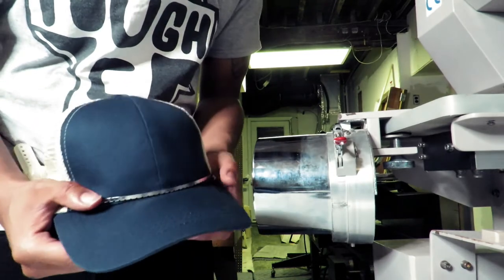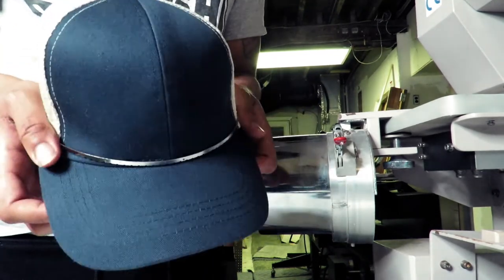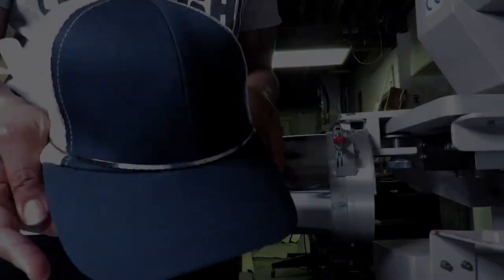Once again this is Dwight here at Sew Hippie and this was how to hoop a hat for embroidery. All right see you guys in the next video. Thank you.